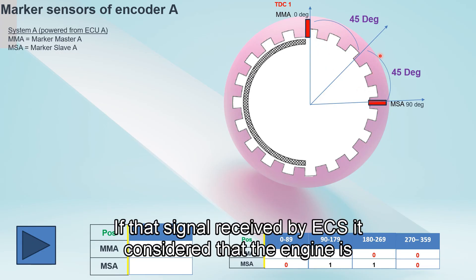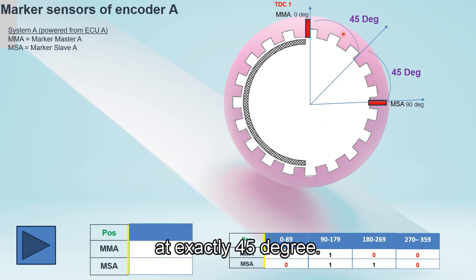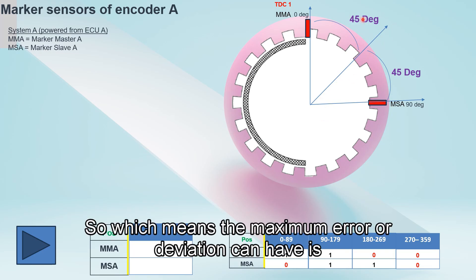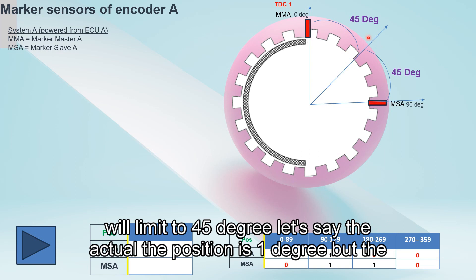If that signal is received by ECS, it considers that the engine is exactly 45 degrees. Which means the maximum error or deviation can have is limited to 45 degrees.